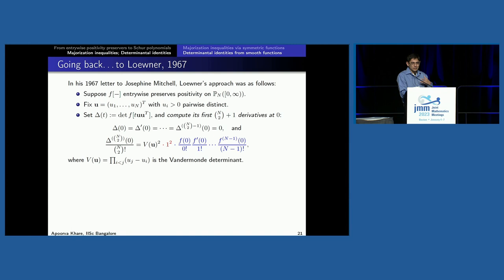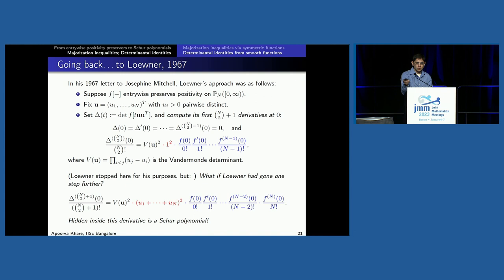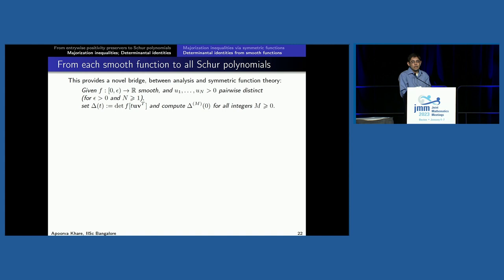What would have happened if he had taken one more derivative? Well, if he had, probably I wouldn't be standing here because all of this would have been known before I was born. When you take one more derivative, you similarly get the Vandermonde squared and the product of Taylor coefficients — but in the middle, the red factor you get is an actual Schur polynomial, a symmetric function. This is the symmetric function corresponding to the Young diagram with one cell, which you sum over all semi-standard Young tableaux with any of the N letters. So it's the square of a Schur polynomial, and this idea provides a novel bridge from analysis back to symmetric functions.